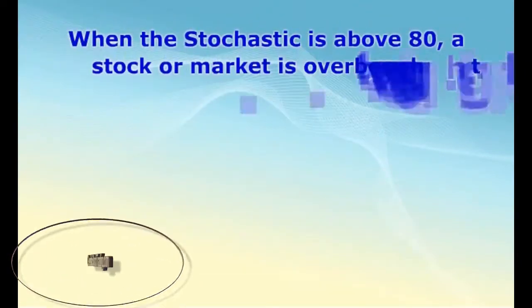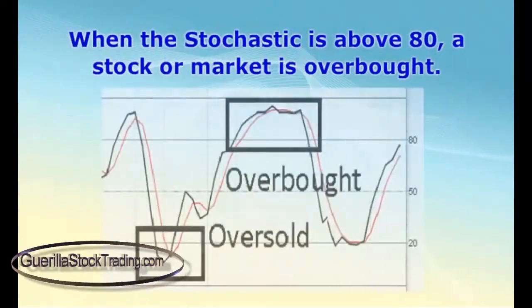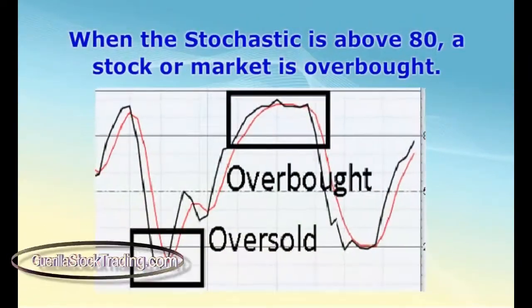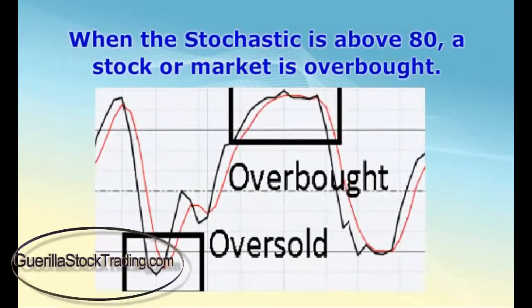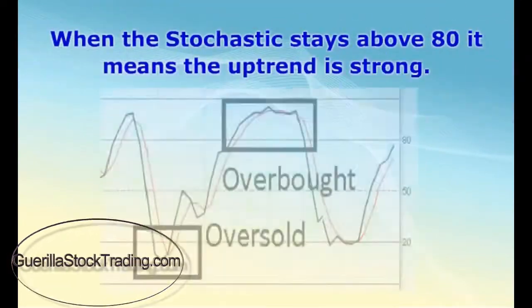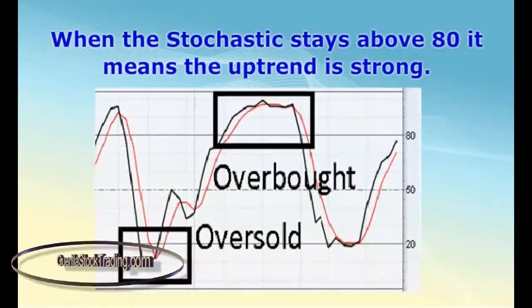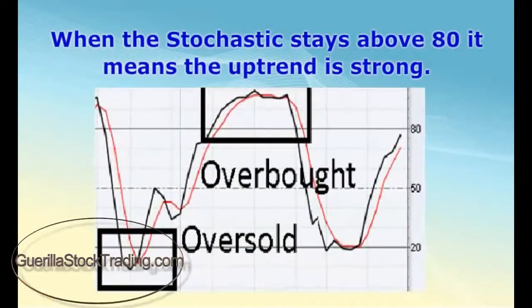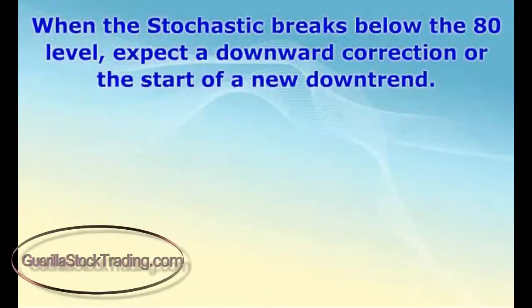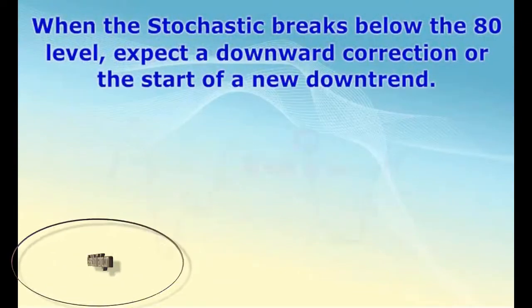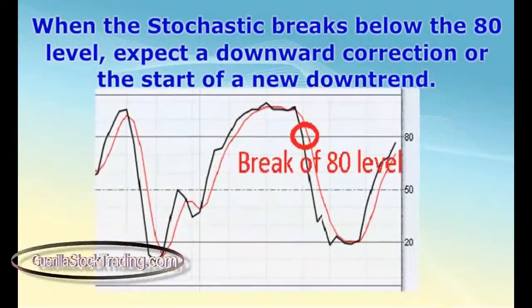When the stochastic is above 80, a stock or market is overbought. When the stochastic stays above 80, it means the uptrend is strong. When the stochastic breaks below the 80 level, expect a downward correction or the start of a new downtrend.